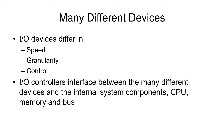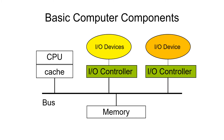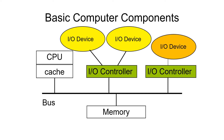The I/O controllers are the interface between the different devices and the internal components of the computer. Here's the usual graph representing the architecture of a computer — you'll notice the I/O controller connects to the bus and also connects to the I/O device. Generally only one I/O controller is drawn, but usually there are many. There's typically one I/O controller for each type of device or each type of interface, and there may be multiple devices connected to each controller.